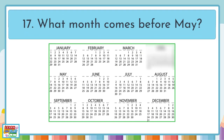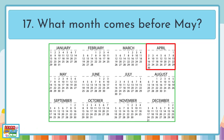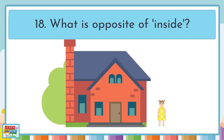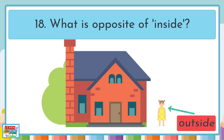Question 17. What month comes before May? April. Question 18. What is the opposite of inside? Outside.